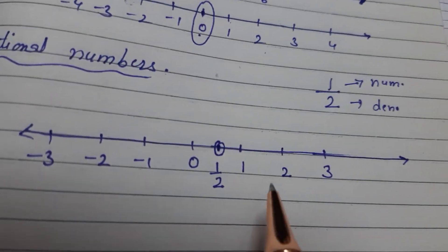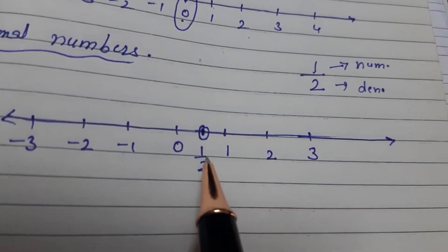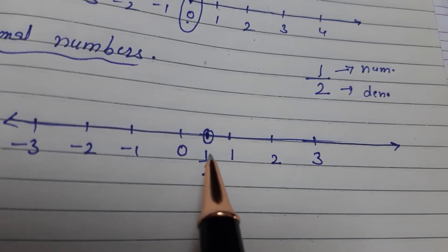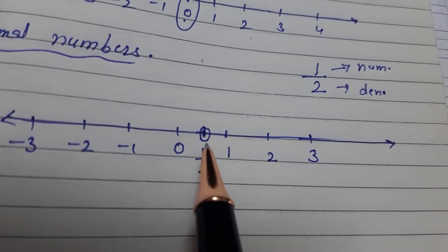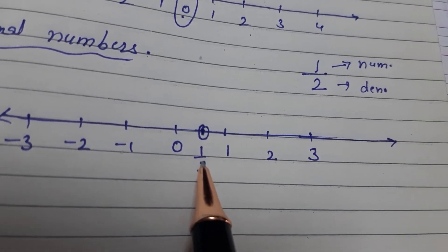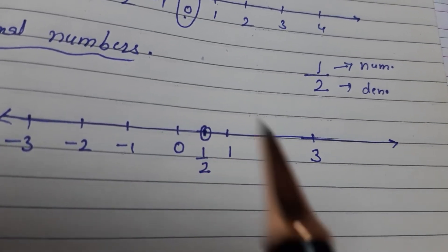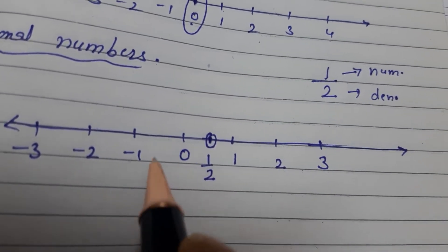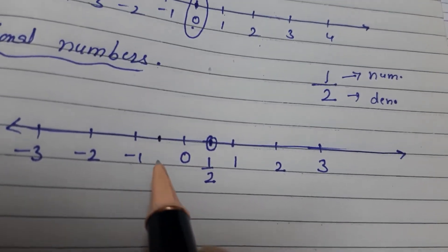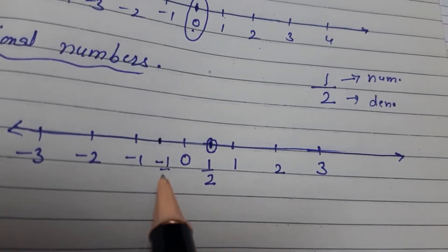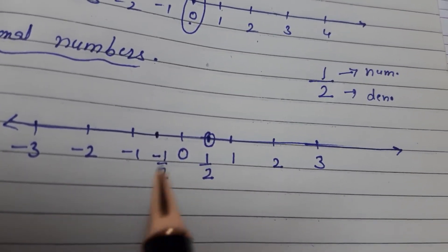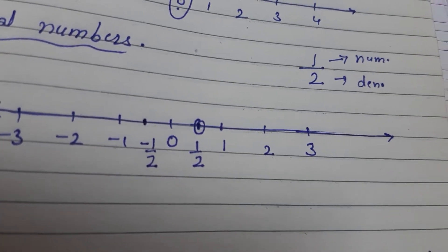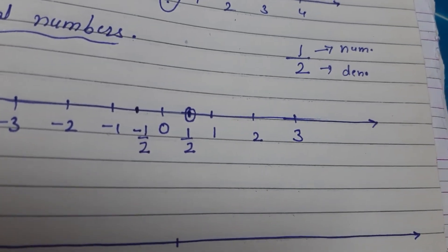Here also, to represent any rational number, for any corresponding positive rational number, a corresponding negative rational number also exists. Like, minus half will be here on the left hand side of 0.